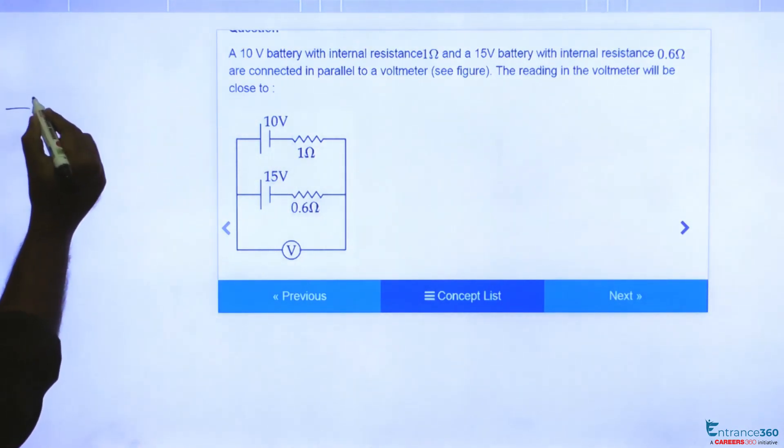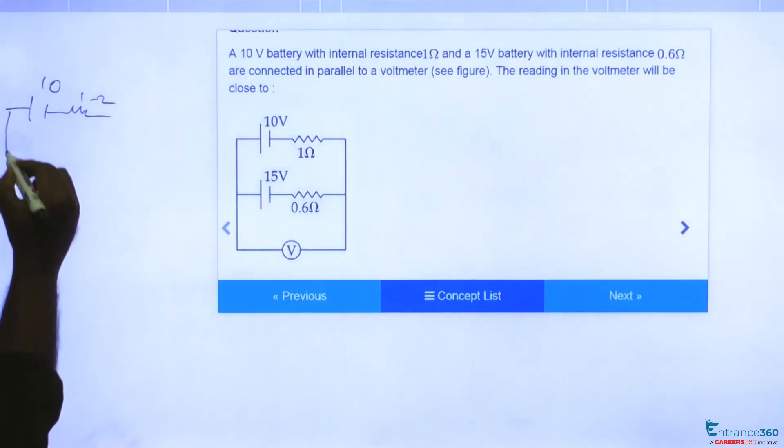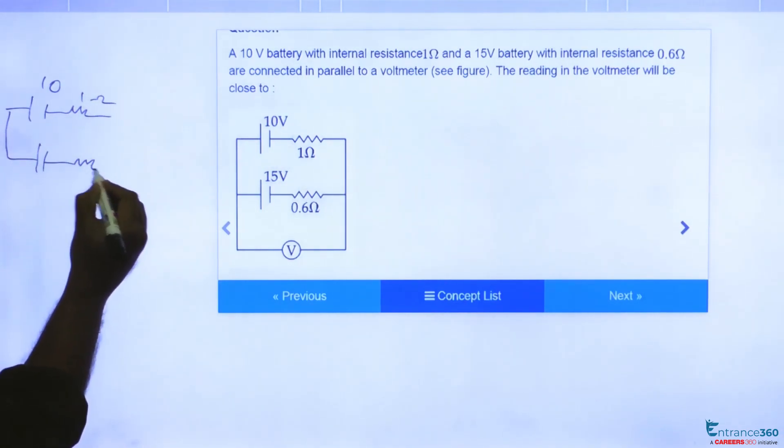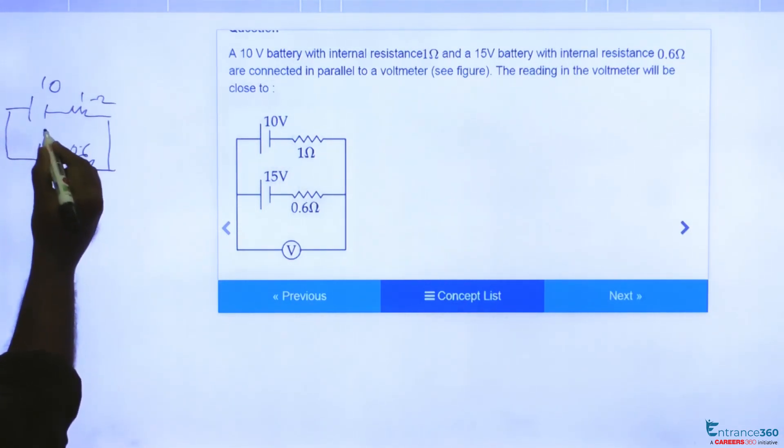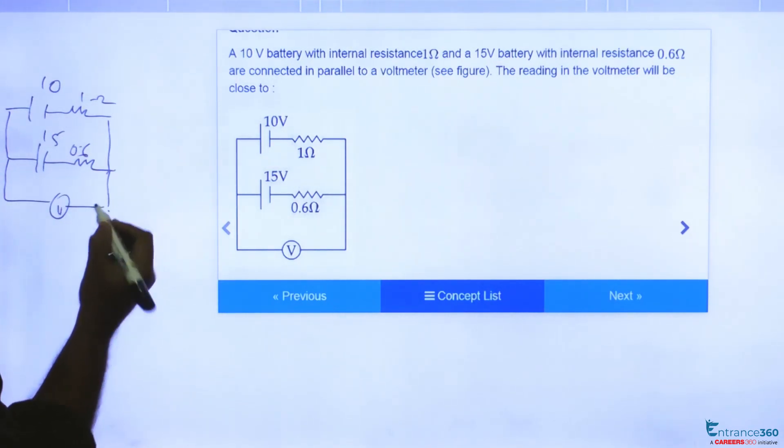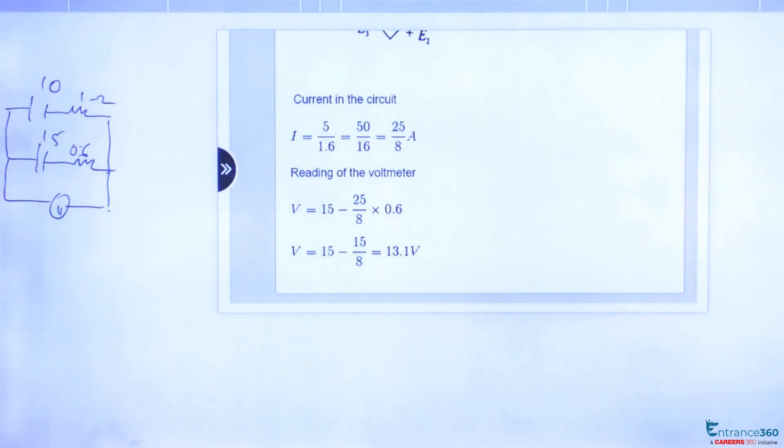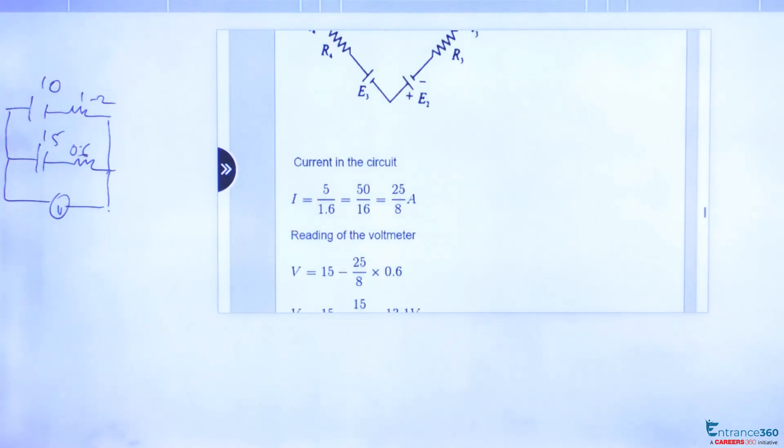So for solving, let's redraw the circuit here. We have a 10V battery with 1Ω internal resistance and a 15V battery with 0.6Ω internal resistance, which is connected across a voltmeter V. To find the reading of the voltmeter, we can use the concept of Kirchhoff's voltage law.